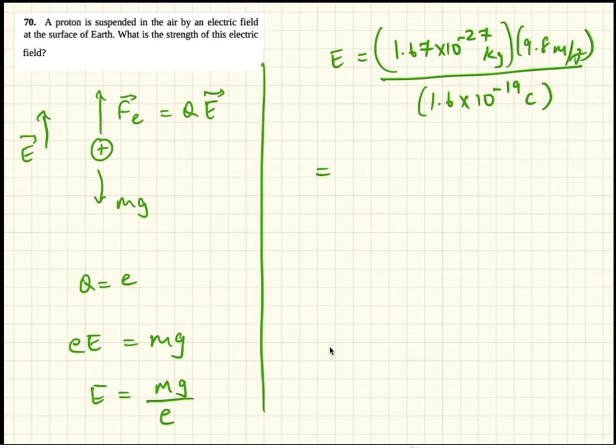So the power of 10 would be 10^-27 plus 19 would be minus 8. So, 1.023 times 10^-8 for the electric field and this will work out in Newtons per coulomb.